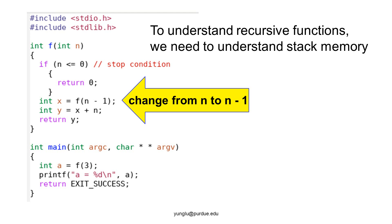The value of n becomes smaller. The function's return value is stored in a local variable called x. The value of x is added with the value of n. The result is stored in another local variable y. The function returns the value of y. The main function calls this recursive function with 3 as the argument. The function's return value is stored in a local variable called a. The program prints the value of a and then exits.